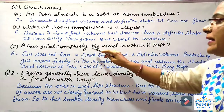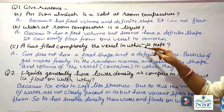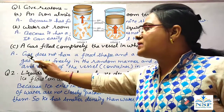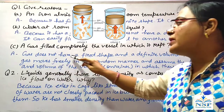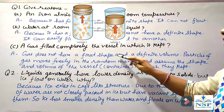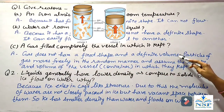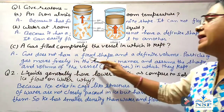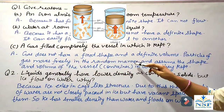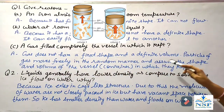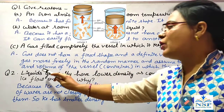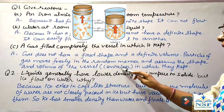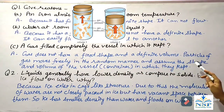A gas fills completely the vessel in which it is kept — why? Because gas does not have fixed shape and definite volume. Particles of gas move freely in a random manner and assume the shape and volume of the vessel or container in which they are kept.